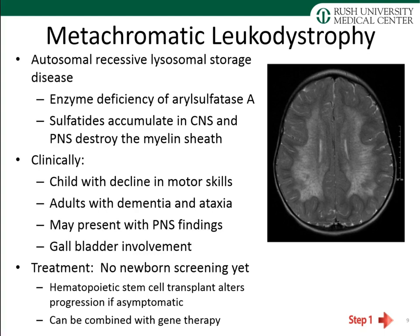Metachromatic leukodystrophy is also an autosomal recessive lysosomal storage disease, resulting from a deficiency of arylsulfatase A. Sulfatides accumulate in both the central and peripheral nervous systems and destroy the myelin sheath. A child will present with a decline in motor skills; an adult will present with dementia and ataxia. Many patients have peripheral nervous system findings, and uniquely among leukodystrophies, these patients also have gallbladder involvement. There is no newborn screening yet. Hematopoietic stem cell transplant can alter progression if the patient is asymptomatic, and can be combined with gene therapy for greater improvement.